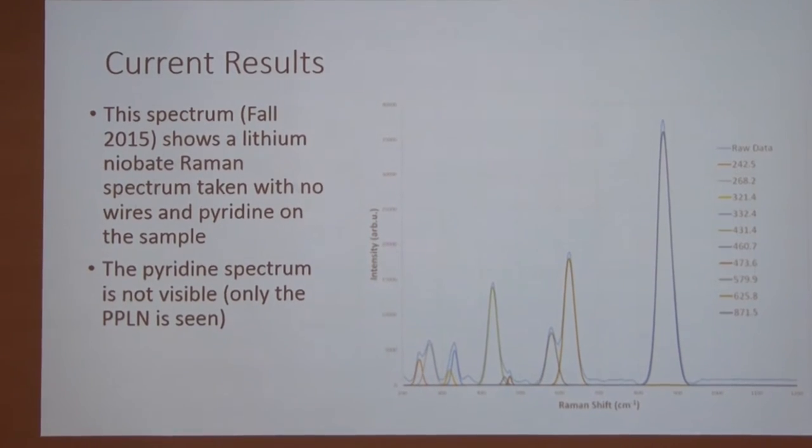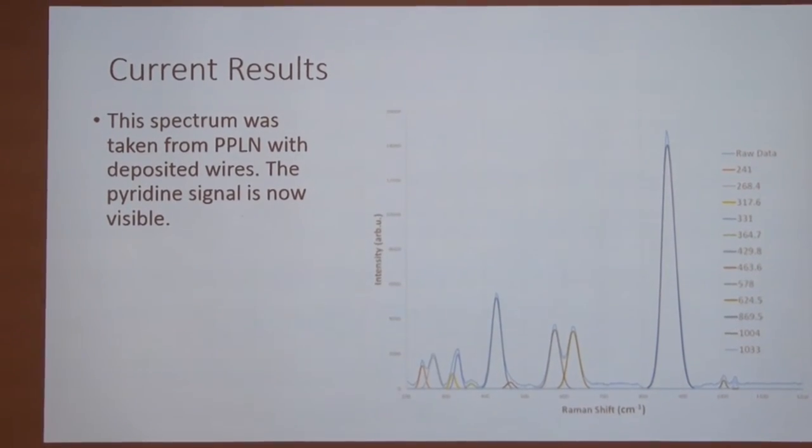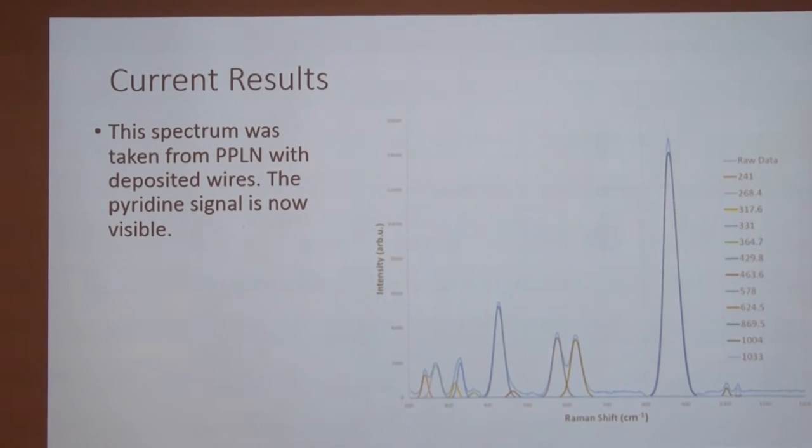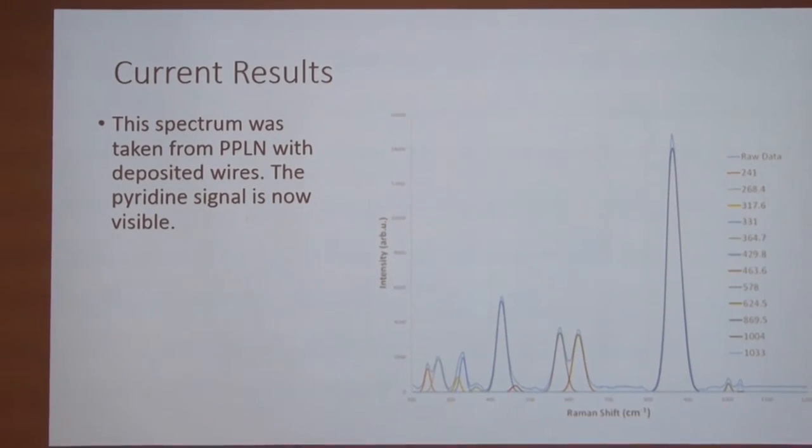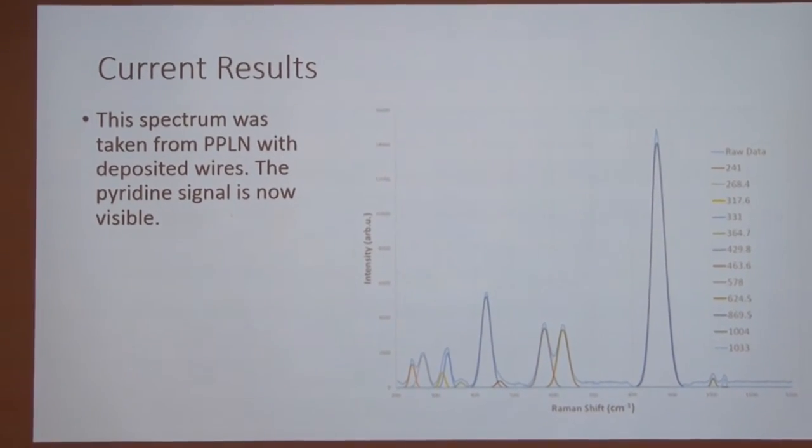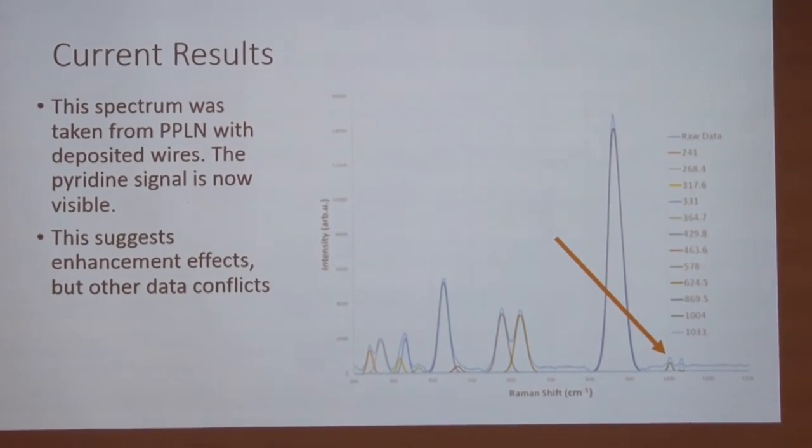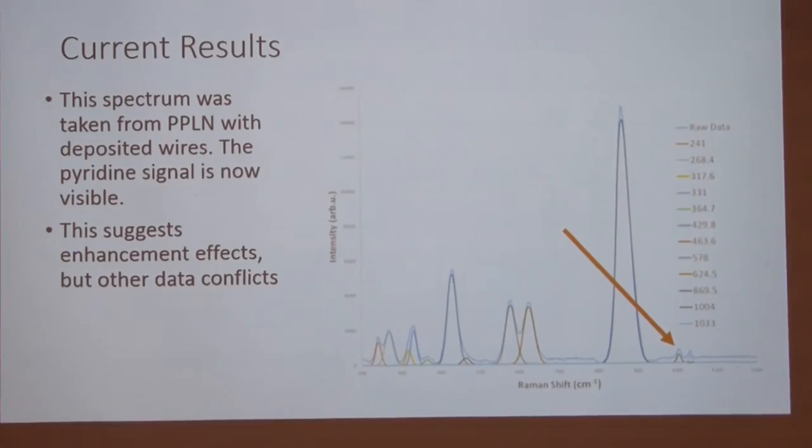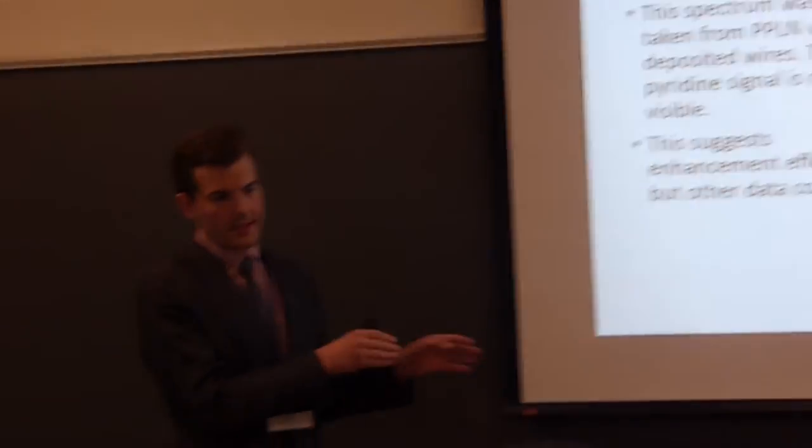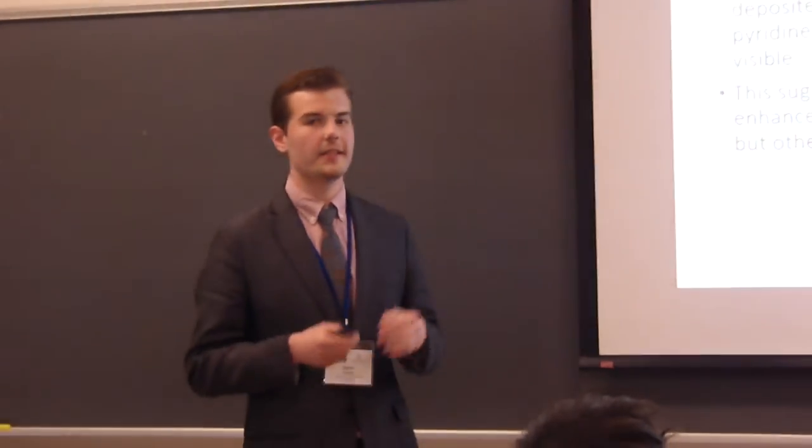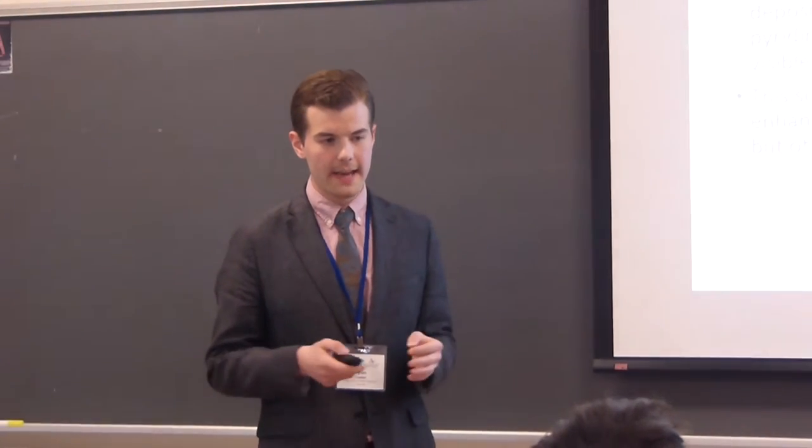So, here's the same sample. But this time we've got wires on it. Still pyridine. And now we can see the pyridine. It's actually that tiny little doublet over there. So, without wires, no pyridine signal. With wires, there is a pyridine signal. That sounds like some sort of enhancement is happening.